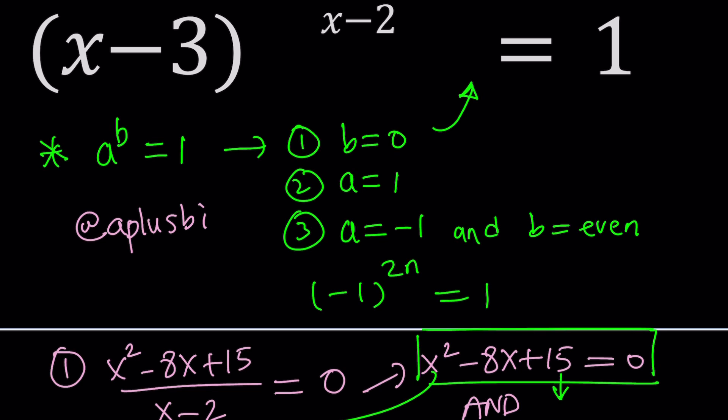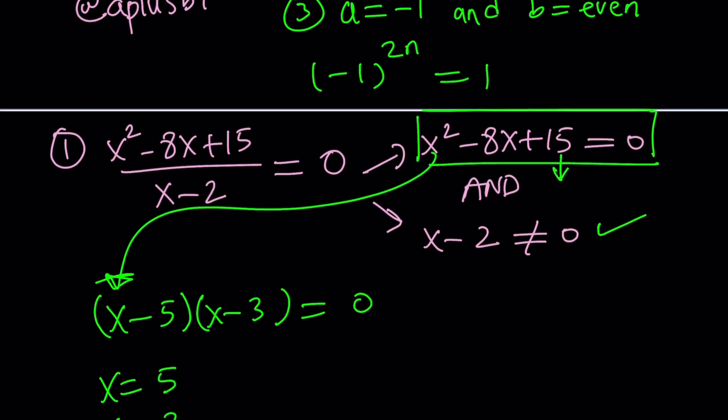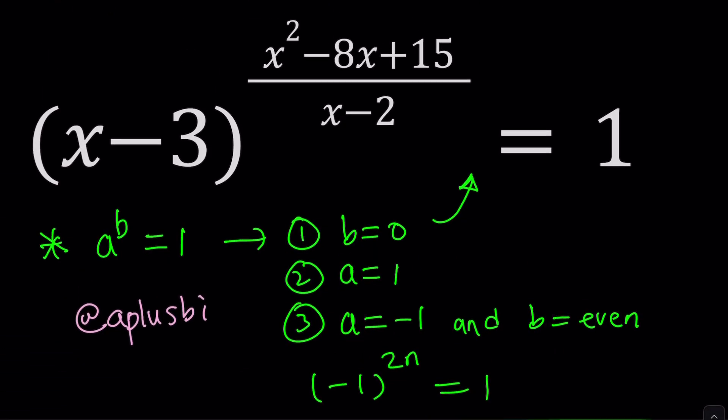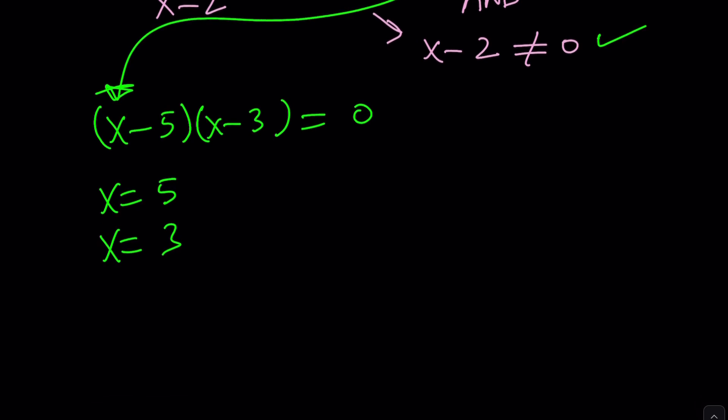So we got two solutions. Uh-oh. If x is equal to 3, we get 0 to the power of 0. So let's go ahead and write down the original problem one more time. We have (x-3) to the power (x²-8x+15)/(x-2).